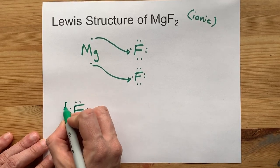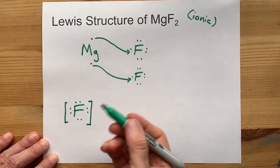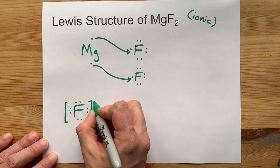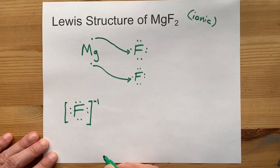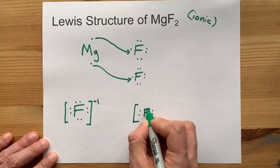Here's the F with 8 dots. Now, that 8 is 1 more than they brought with it. They brought 7, remember, so it has a charge of minus 1. I'm going to draw 2 of them because we needed 2 of them in the end.